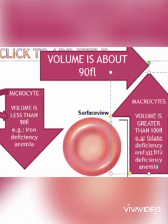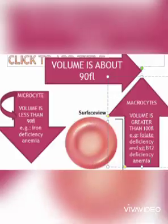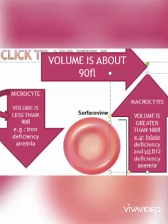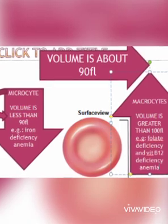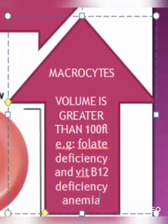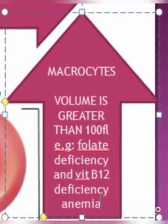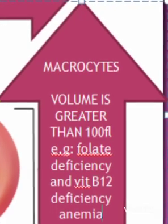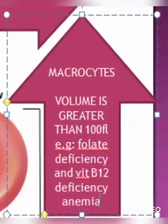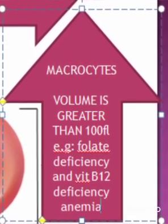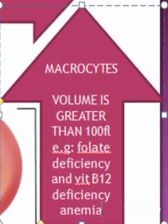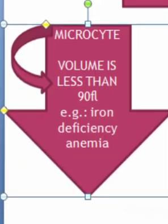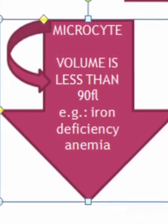The volume of one red blood cell is about 90 femtoliters, or 80 to 100 femtoliters. Red blood cells larger than this are known as macrocytes, seen in conditions like vitamin B12 deficiency anemia. Red blood cells smaller than normal are known as microcytes, seen in certain anemias, especially iron deficiency anemia.